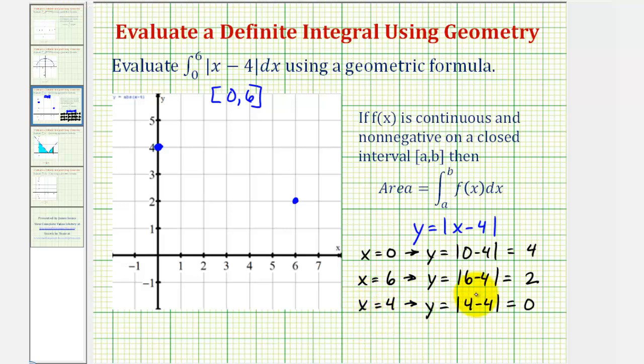So the point four, zero would be here on the x-axis, and therefore the graph of the absolute value function moves up in this direction, and then moves up in this direction.